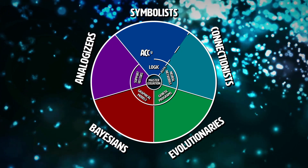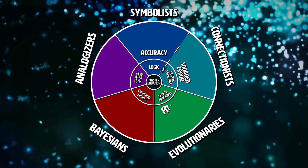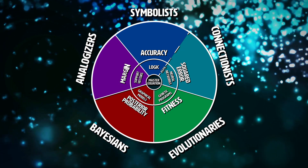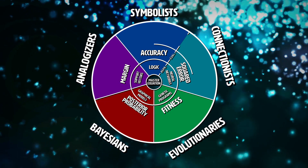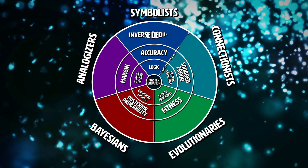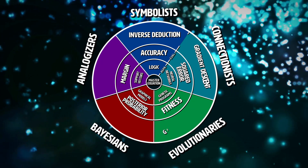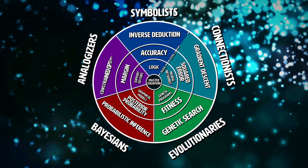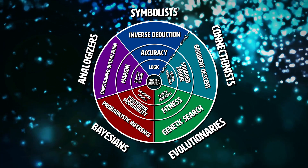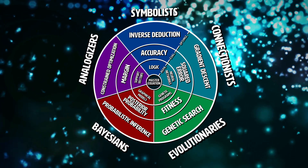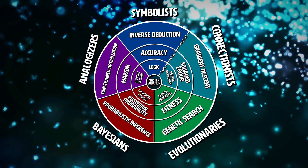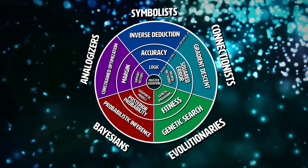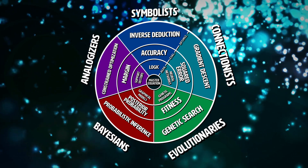He then goes on to algorithmically describe backpropagation and genetic programming — master algorithms for each of these tribes. Ultimately, he argues that the eventual master algorithm, able to learn how to do any task, is likely a combination of all of these and we are slowly getting there discovery by discovery. He makes connections between these separate methodologies, saying that no matter what technique we use, all of them are meant to do the same three things: represent, evaluate, and optimize.